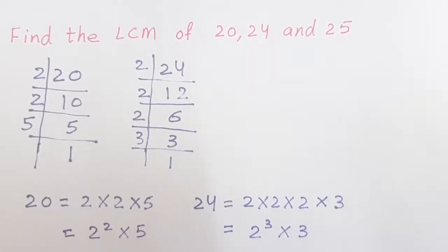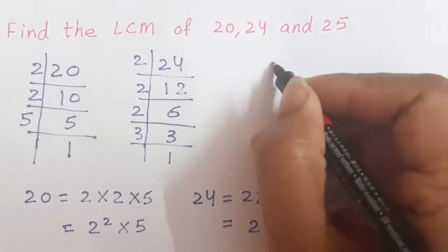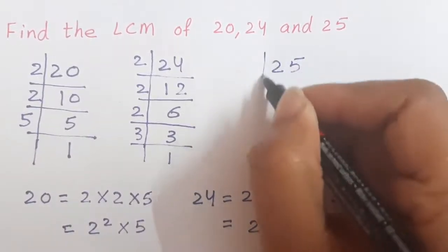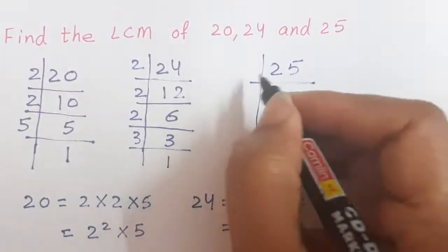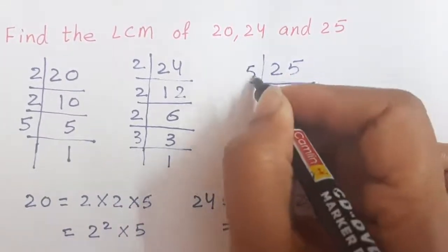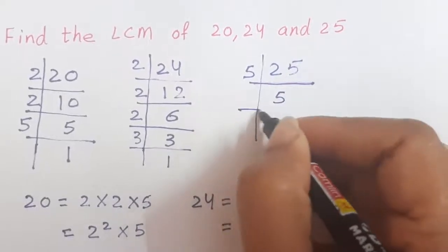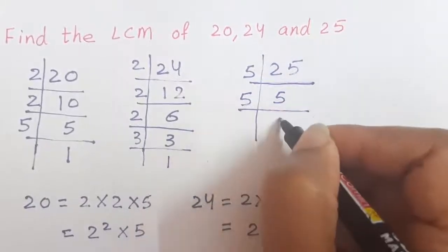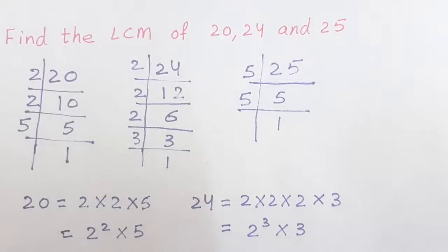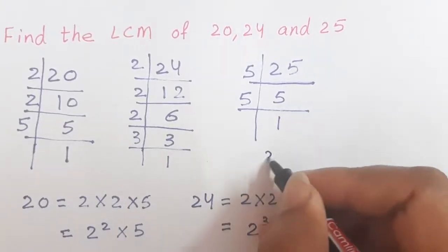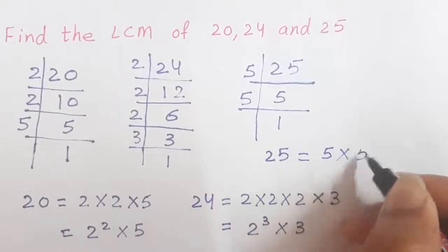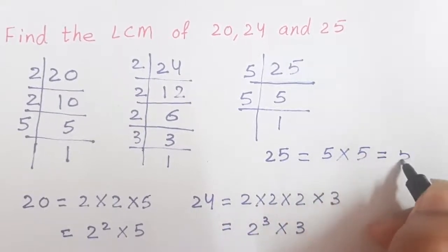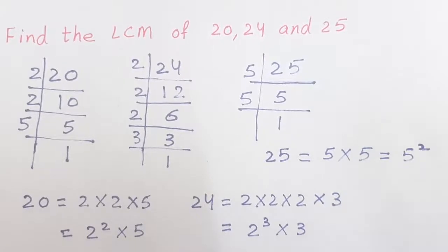Now children, let us find for 25. 25 will go directly with 5. So, this is 5, 5s are 25, then 5, 1s are 5. So, 25 is equal to 5 into 5 or you can say 5 square.